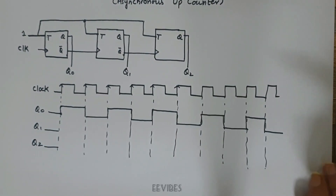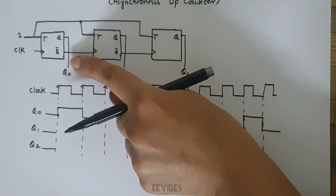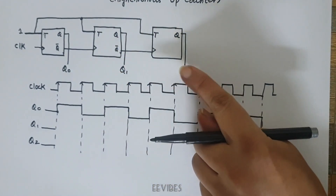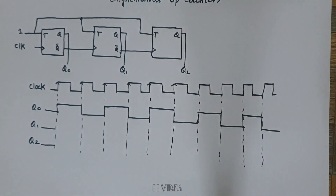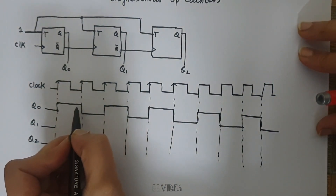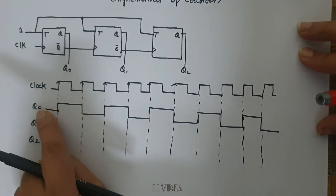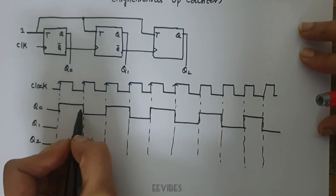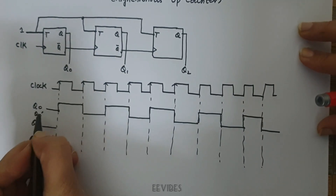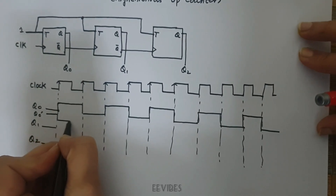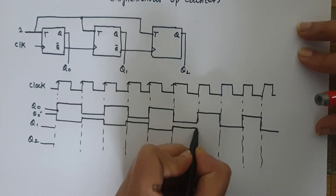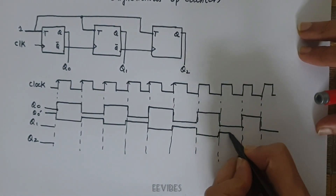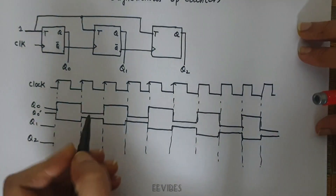The other two flip-flops have their clock inputs driven by the Q-bar output of the preceding flip-flop, so they toggle their state whenever the preceding flip-flop changes from Q equal to 1 to Q equal to 0, which results in a positive edge of the Q-bar signal. The Q-bar of Q0 will be the opposite of the Q0 node, so if I draw Q-bar it would be opposite of Q0.